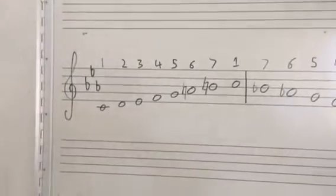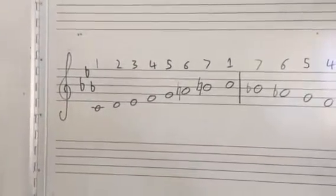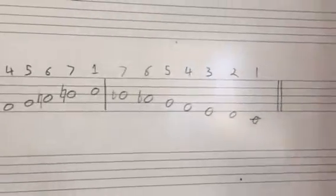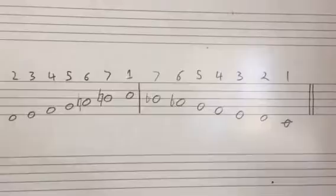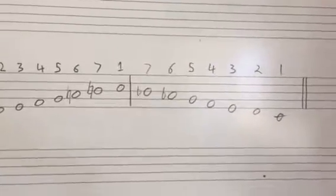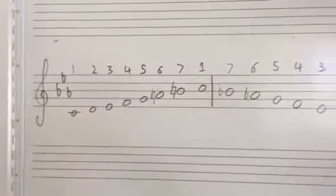So ascending, the sixth and seventh are pushed up a semitone, and descending they are back to normal, just like a normal natural minor scale, and we need to indicate that in the scale as well.